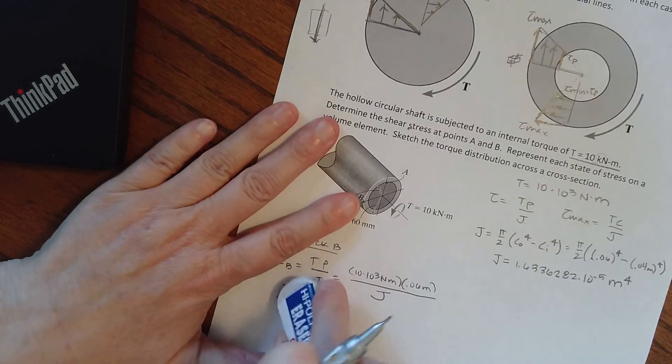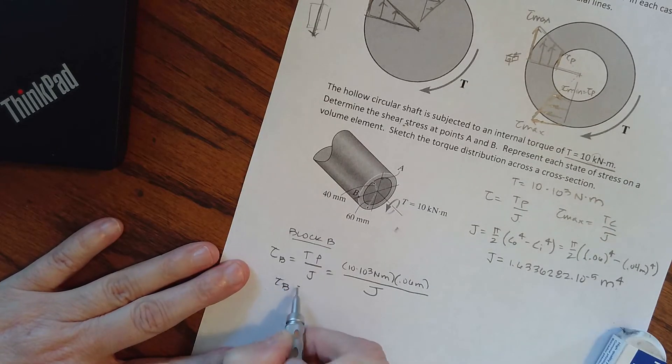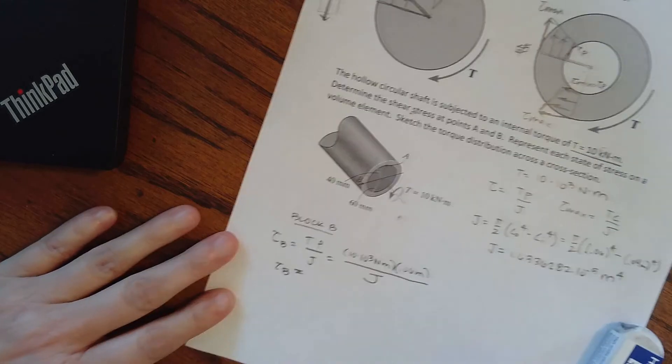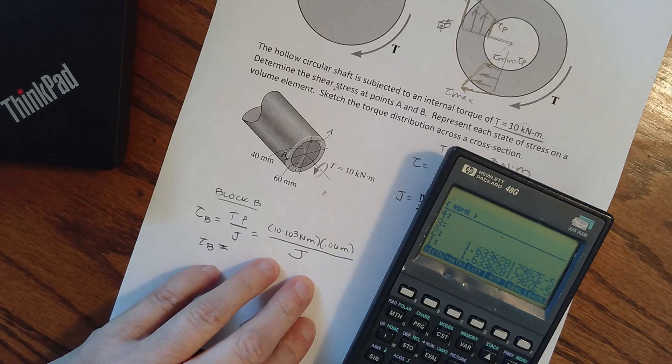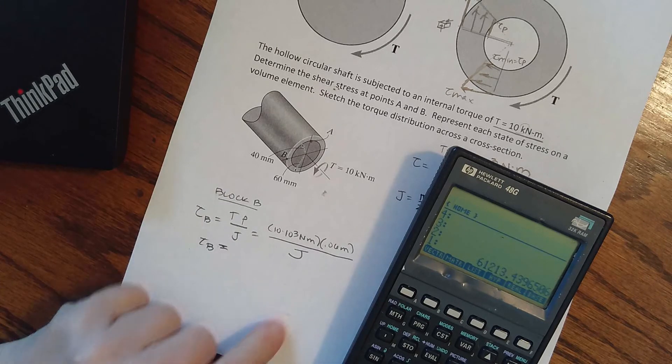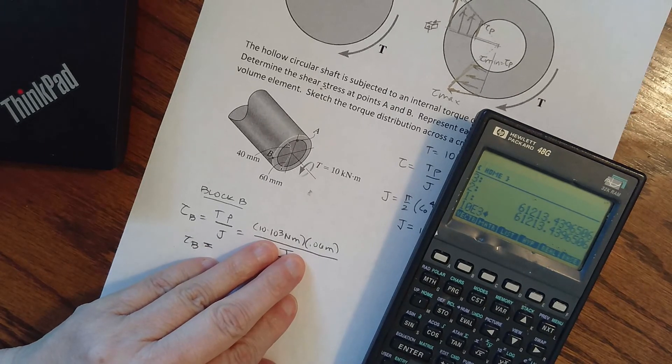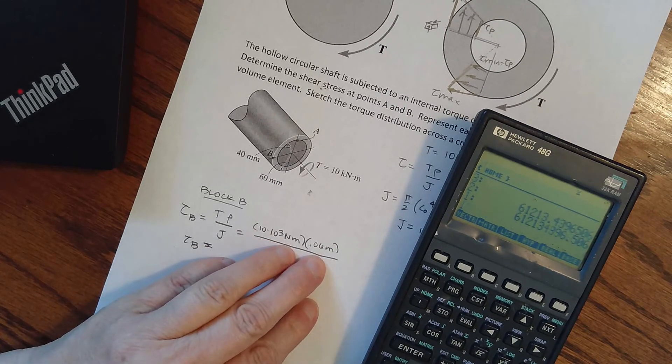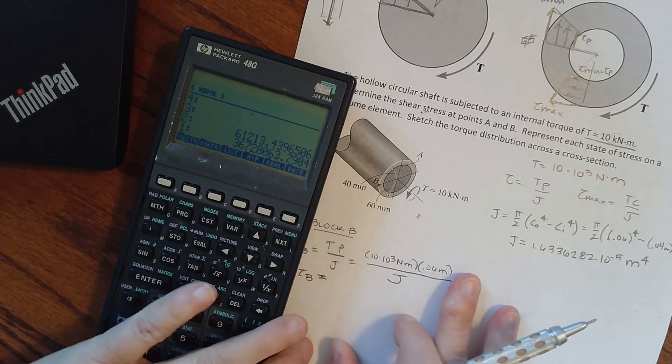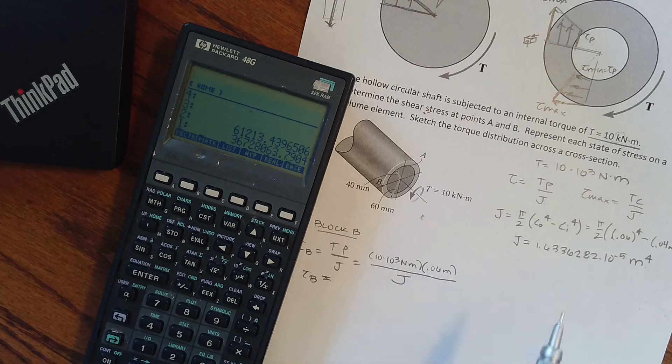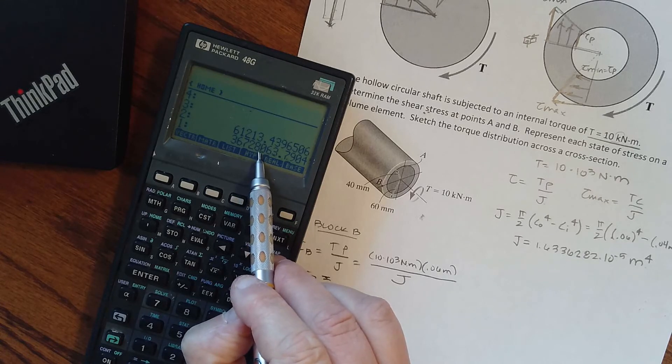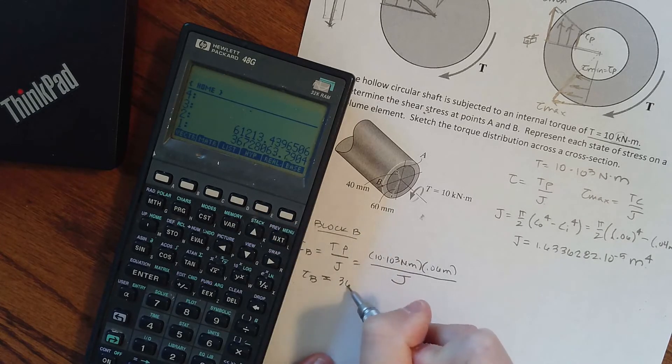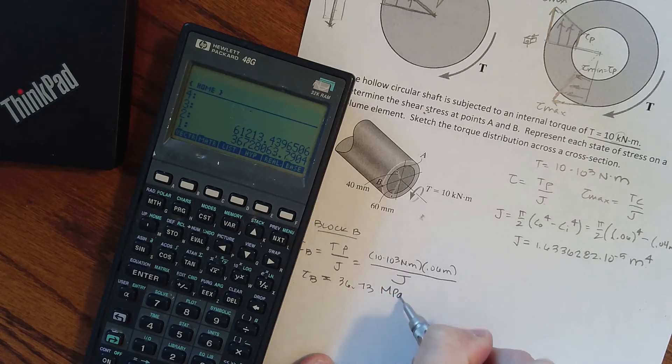Our shear stress at B, we're going to enter that in. We're going to take the reciprocal so it's on the top. So now I have 10 times 10 to the third, 0.06 times, and I get this ginormous number. I know it's in newtons and meters, so we're going to make it in kilonewtons, 1, 2, 3, and then mega 1, 2, 3. So I have 36.73 mega pascals.